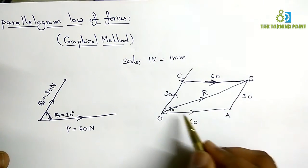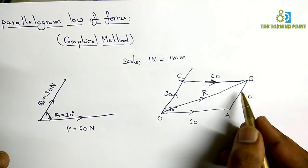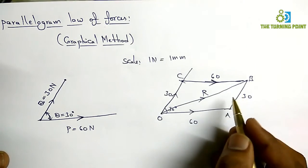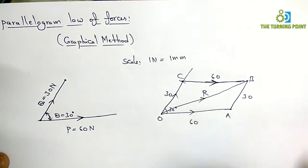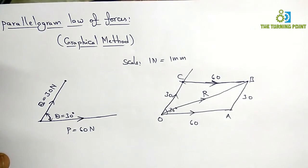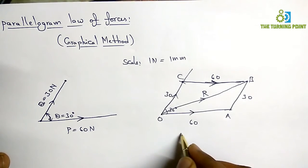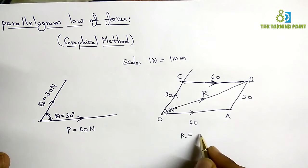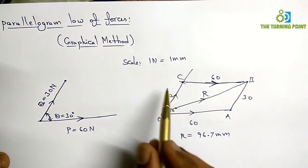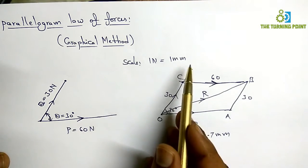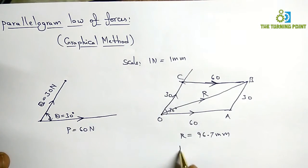Measure the distance between point O and B with the help of a scale. Suppose you got that value as 96.7 mm. As per the scale I considered, 1 newton equals 1 mm, so then it will be 96.7 newtons.